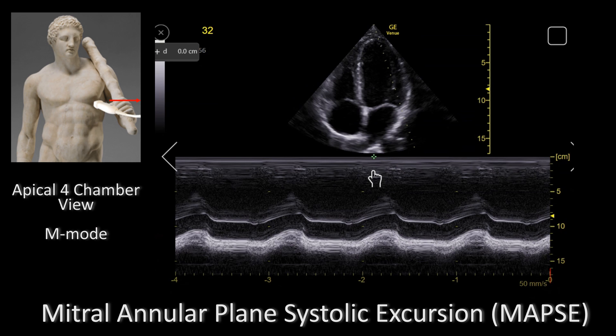Here's how you make the measurements. After getting a good apical four chamber view, you select M mode on your ultrasound. You place the M mode vector right through the annulus, which is right here, and you should be getting an image looking like this.